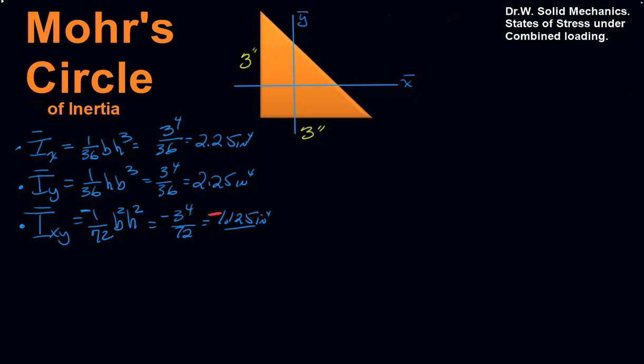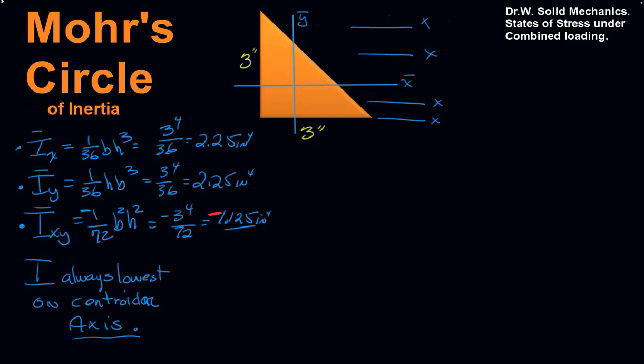There's a handy rule: the moment of inertia of an area will always be the lowest when it's on a centroidal axis. However, that alone doesn't mean it's the lowest possible value overall — we could also rotate the axis to make it slightly lower or higher. That's where Mohr's Circle comes in. Being on the centroidal axis is not enough, particularly if it's not symmetric.